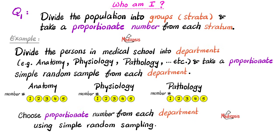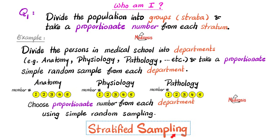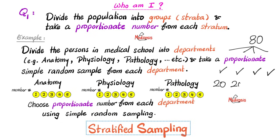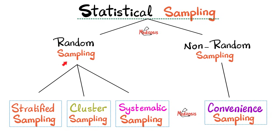What type of statistical sampling is this? Since the groups are called strata, this is called stratified sampling. Here's another example: we take 80 students from a university, with four strata — freshman, sophomore, junior, and senior — and take 20 students from each stratum using simple random sampling. This is stratified sampling. Stratified sampling is a subtype of random sampling.